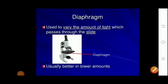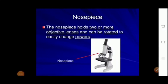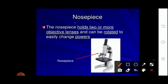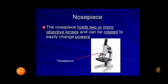Coming to the next part, which is called the nose piece. It is a rotatory disc that can easily rotate and change power, as it holds two or more objective lenses. Those were all the mechanical parts of the microscope.